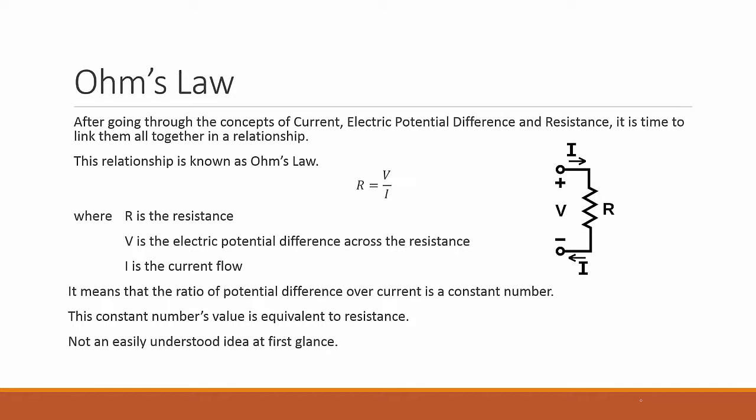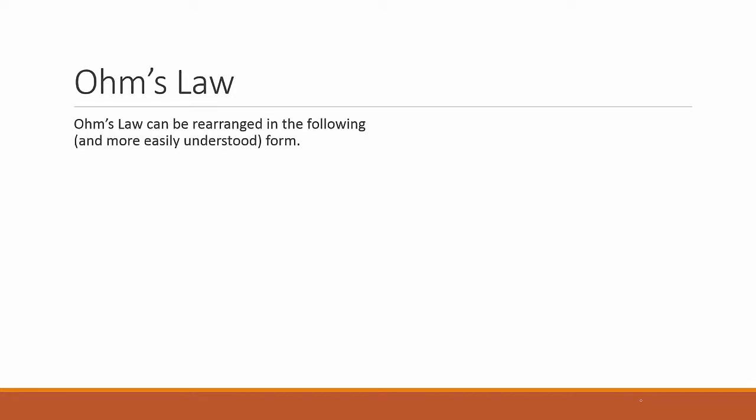It's actually not an easily understood idea at first glance. However, Ohm's Law can be rearranged to be in the following and more easily understood form: I equals V over R. So instead of R equals V over I, we just swap the position of I and R.